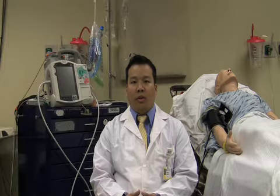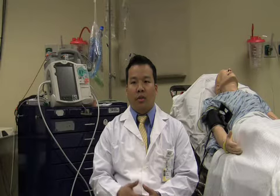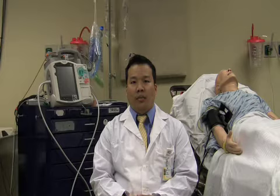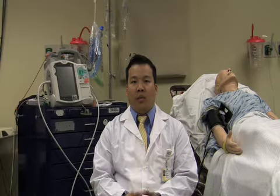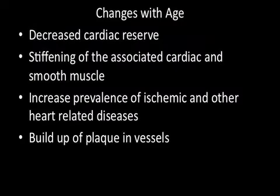Arterial sclerosis is when there's plaque buildup within the coronary arteries, partly an event that occurs cumulatively through aging. Certain factors put you at more risk, some being genetic as well as dietary, and underlying exercise activity helps to build reserve. As you age, plaques tend to accumulate, initially beginning as fatty plaques that calcify, putting you at increased risk for a coronary event. With age there's decreased cardiac reserve, stiffening of cardiac and smooth muscle, increased prevalence of ischemic and other heart-related diseases, and buildup of plaque in the vessels.